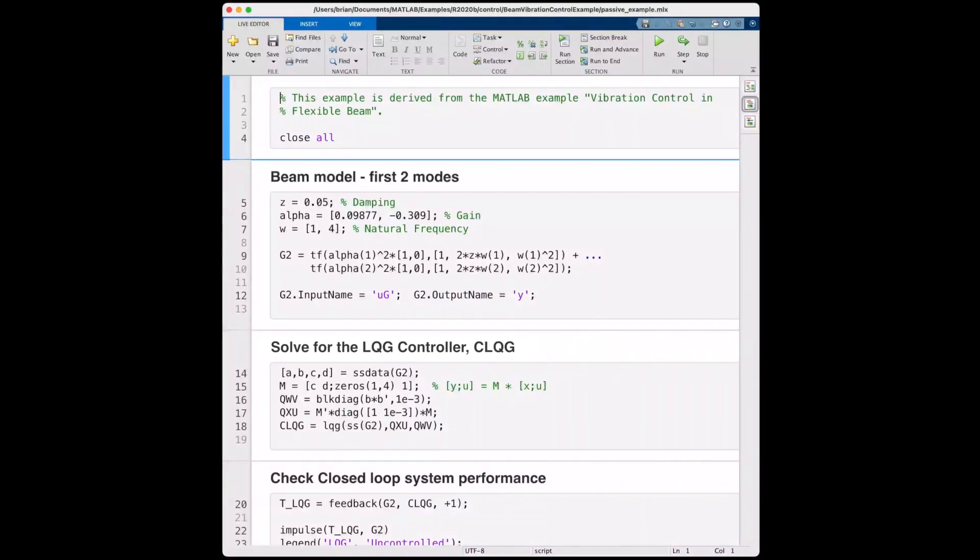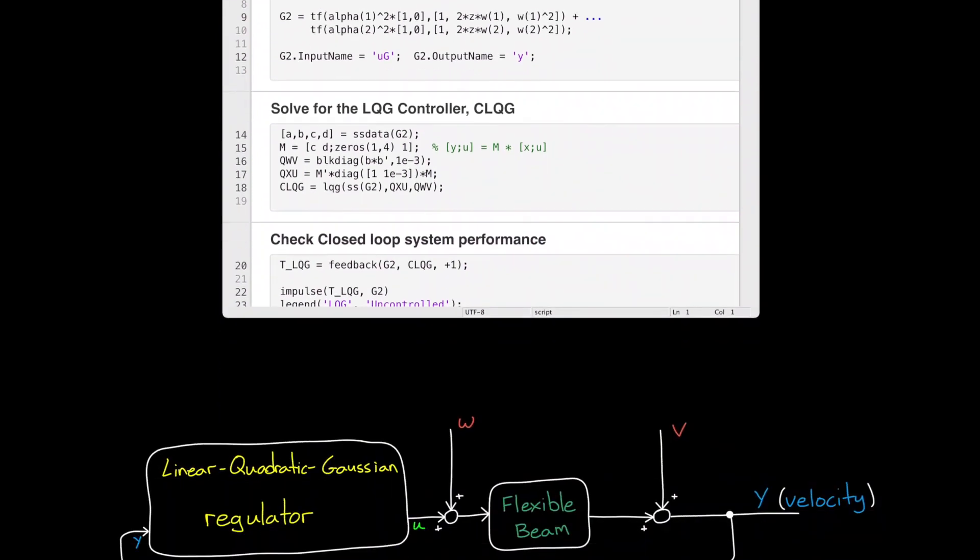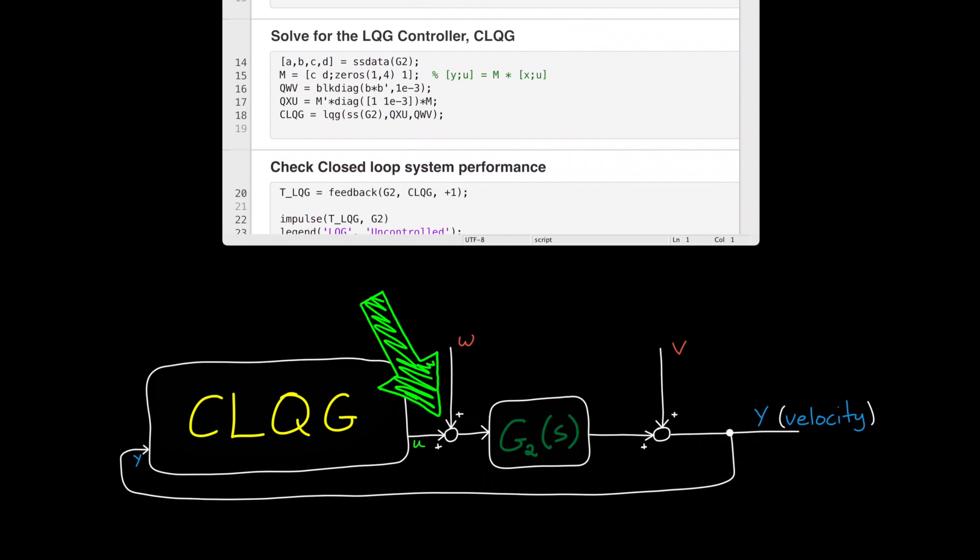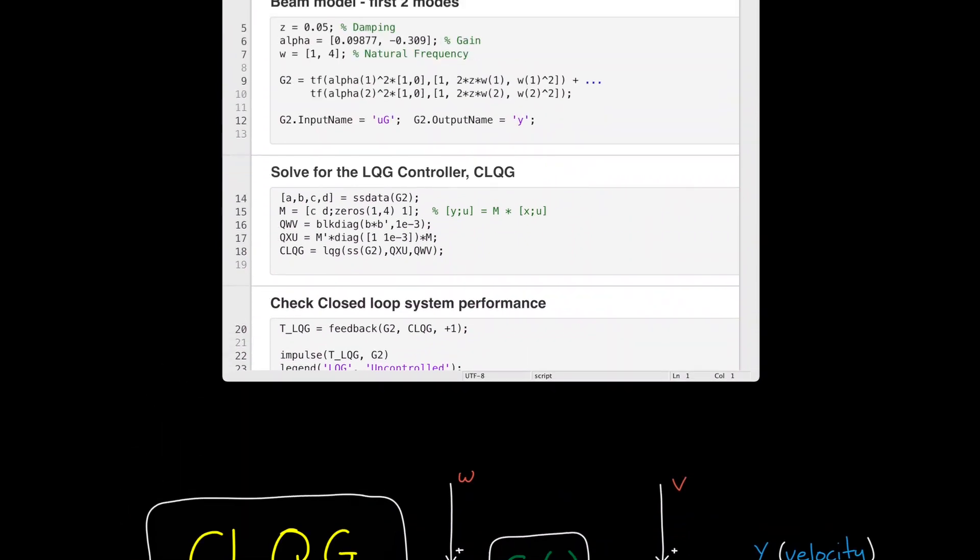In MATLAB, I've written this live script to walk through the LQG design. I define zeta, alpha, and omega for the first two modes and build the transfer function in G2. Here, the transfer function is converted to state space form, and then the parameters of the controller are defined and the LQG controller is created. Looking back at the block diagram for our system, we have G2, which is the model of the plant using just the first two bending modes, and we have the LQG controller.